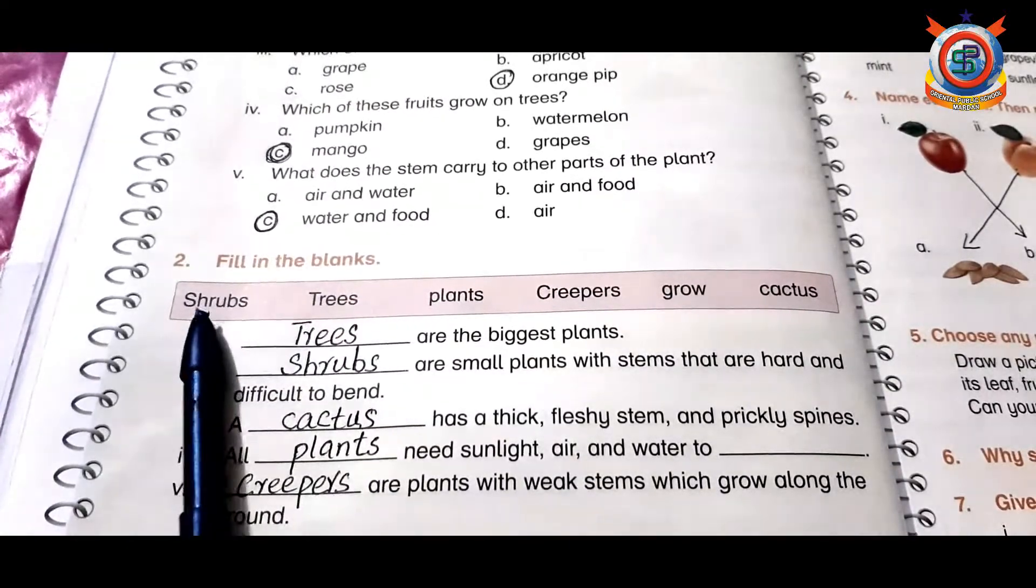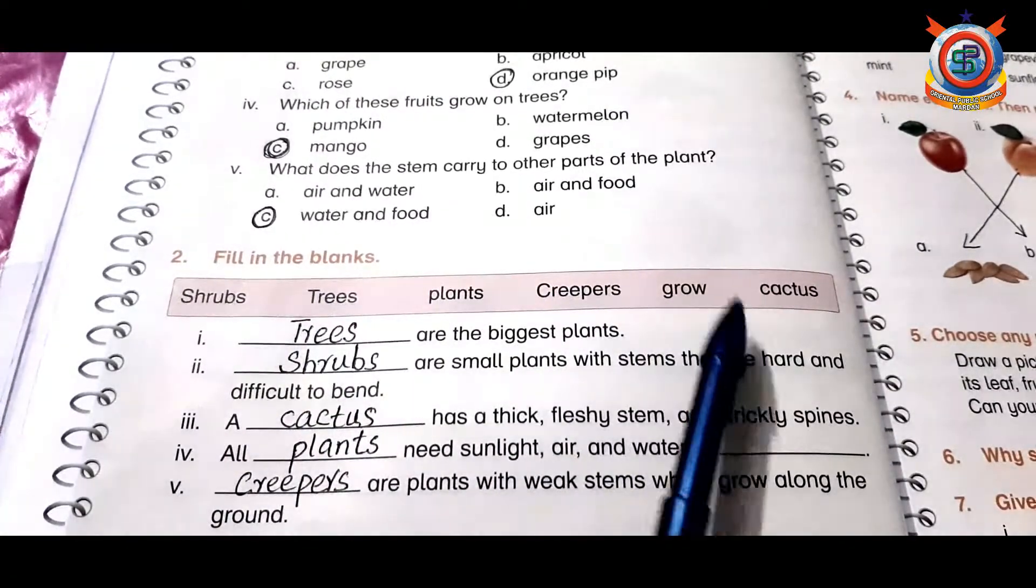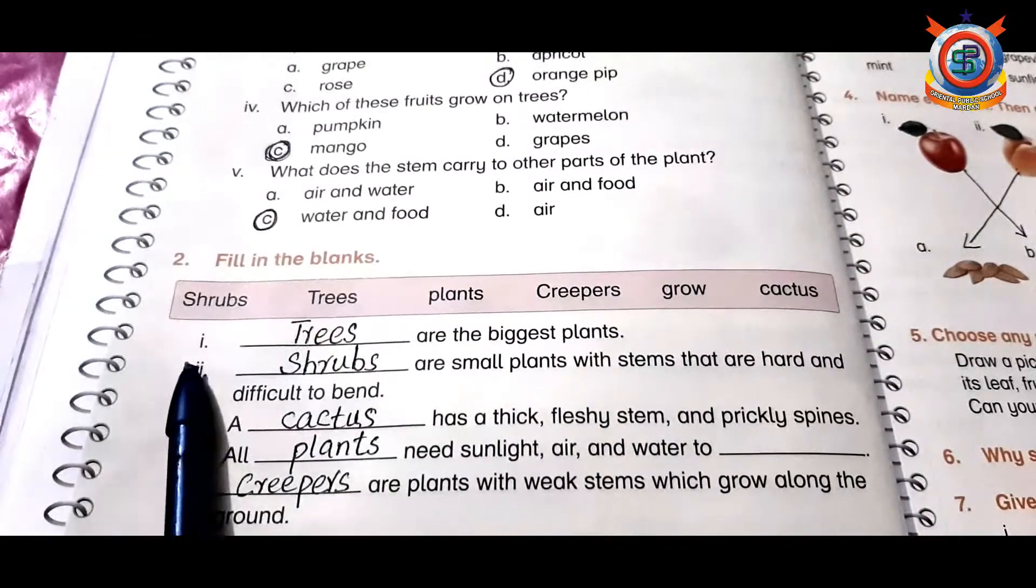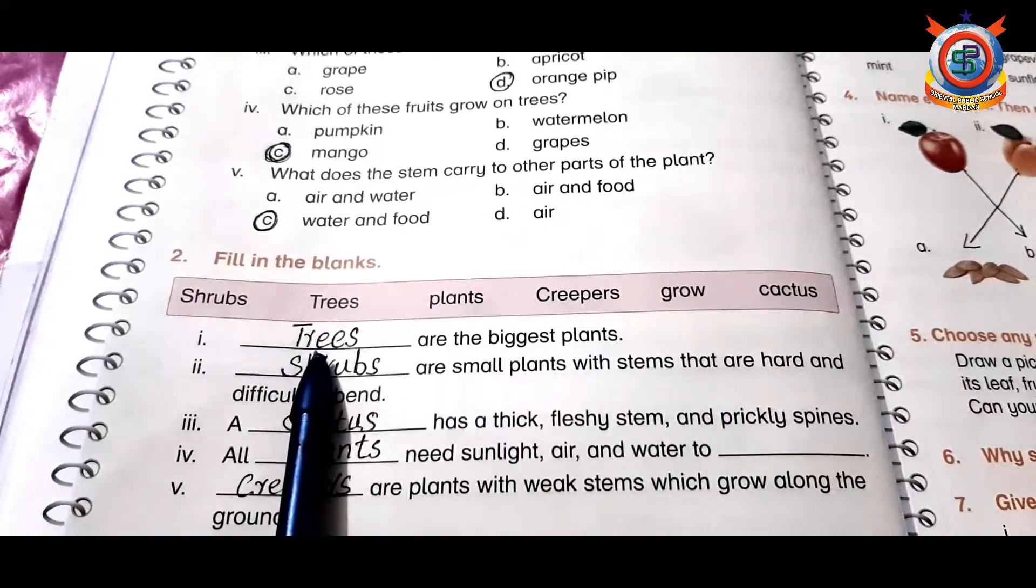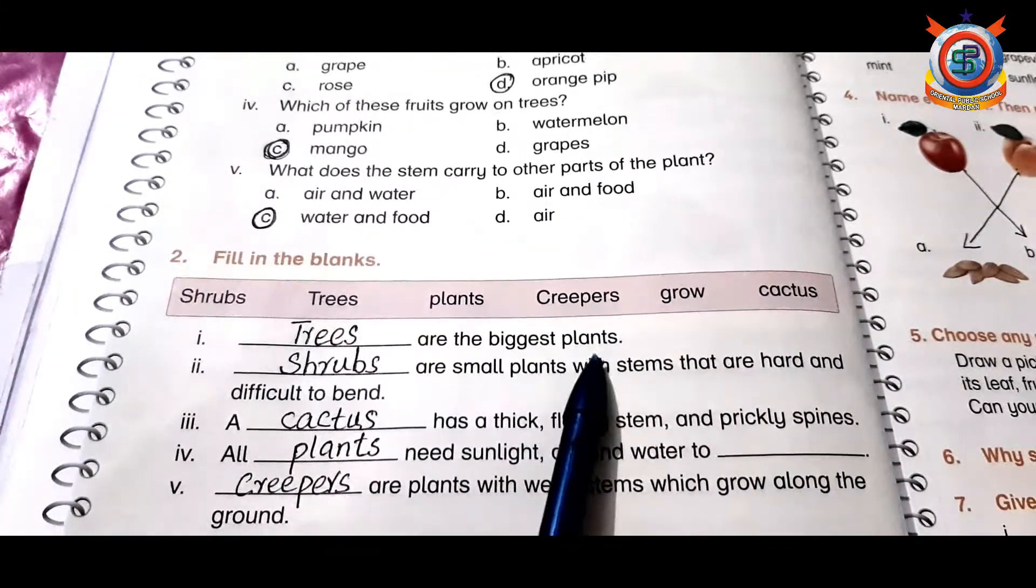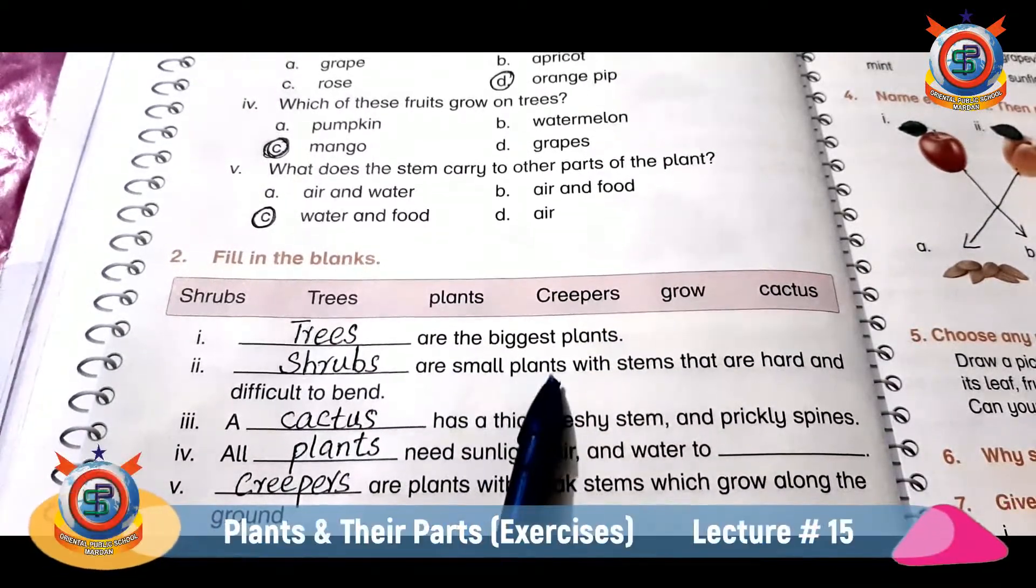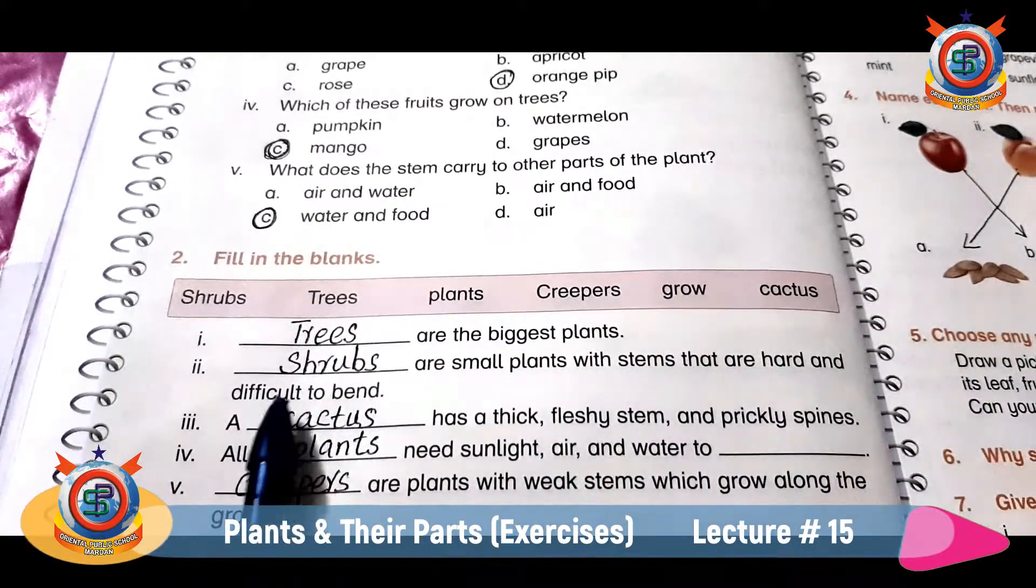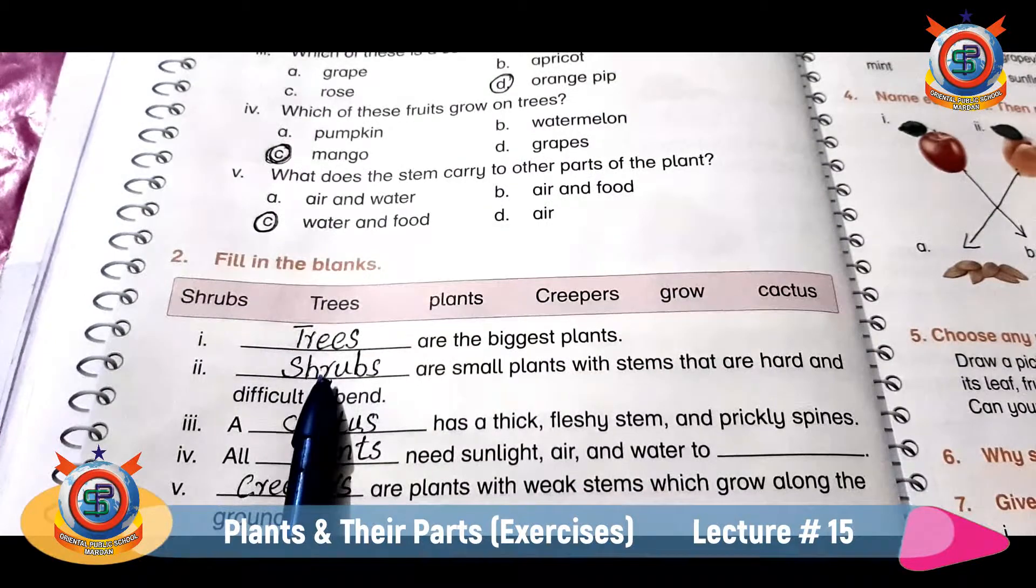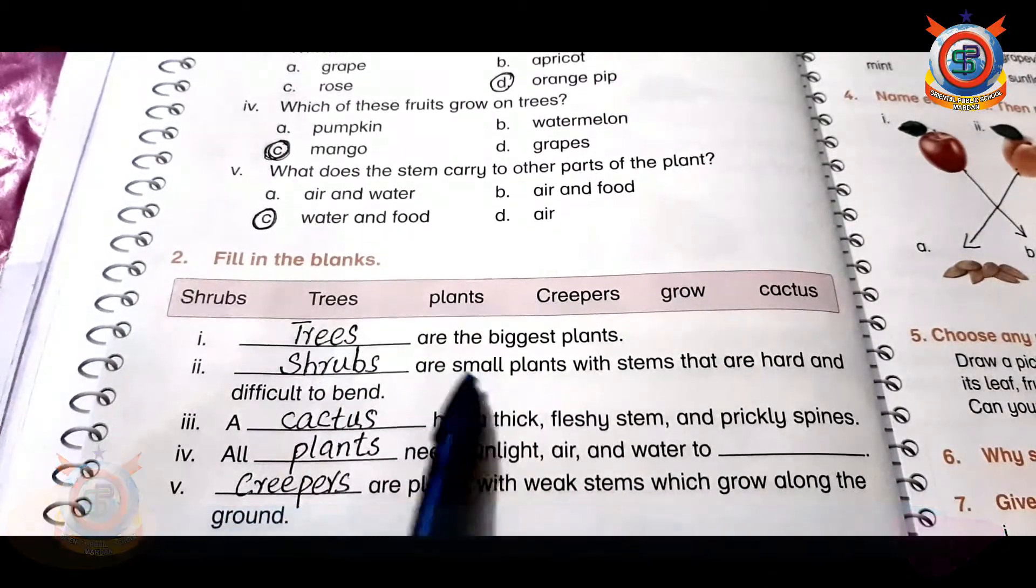Now question number two is fill in the blanks. These are words and you will use these words. Number one: trees are the biggest plants. Number two: shrubs are small plants with stems that are hard and difficult to bend.